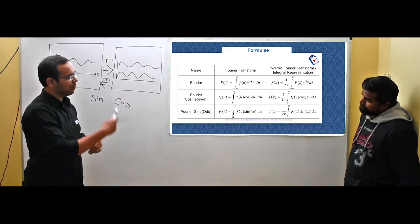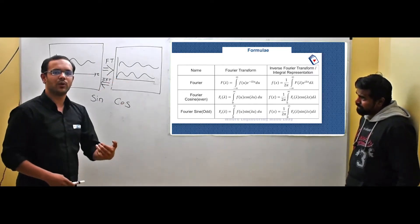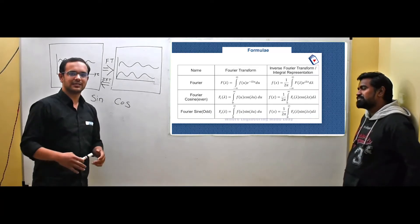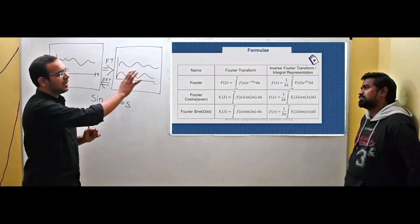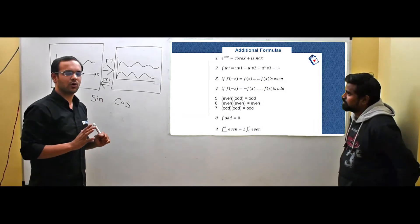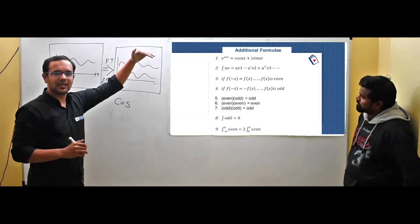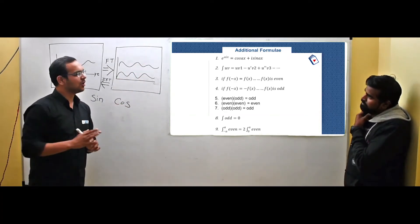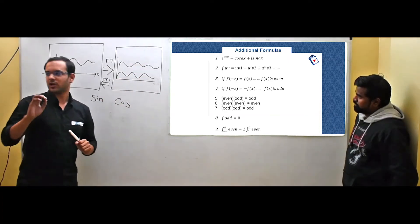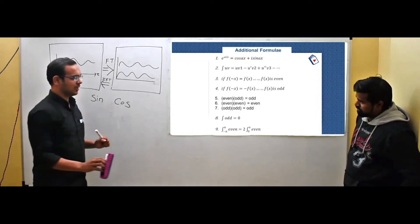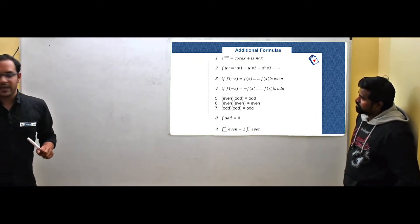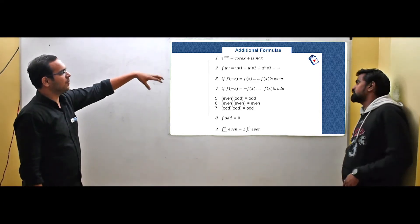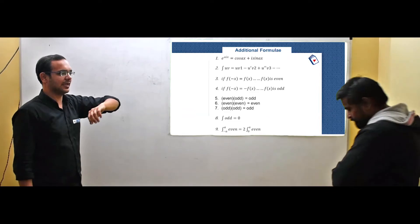To derive this formula, we need some prerequisite formulas. The first important formula is Euler's formula: e to the power ix equals cosine x plus i sine x. That is what we need to use.